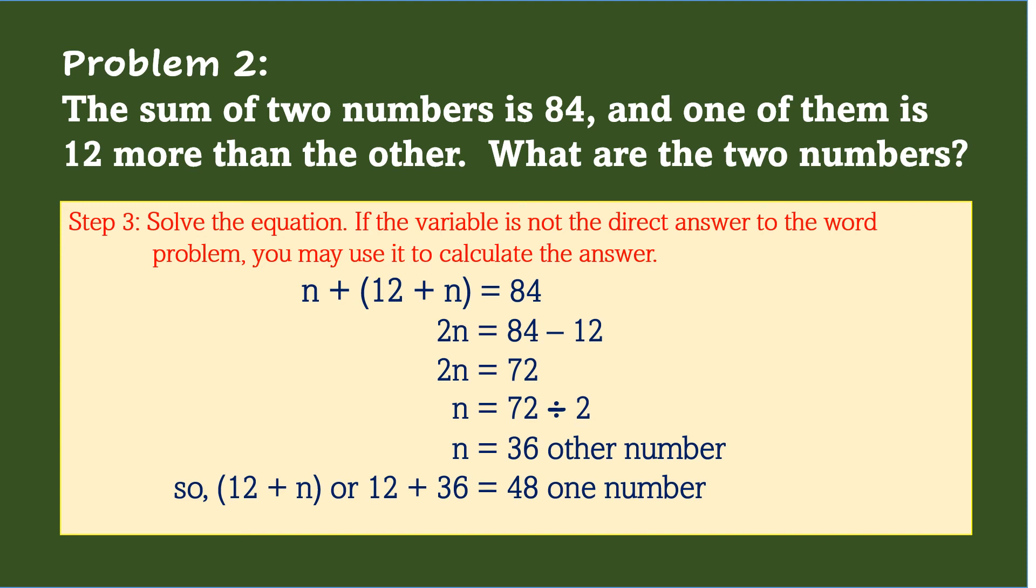So, n as the other number is equal to 36. So, 12 plus n or 12 plus 36 equals 48 as one number.